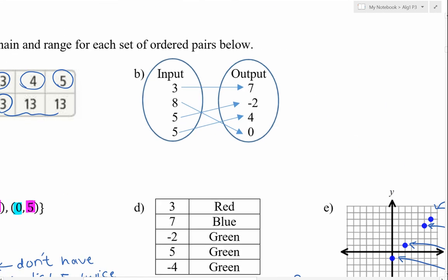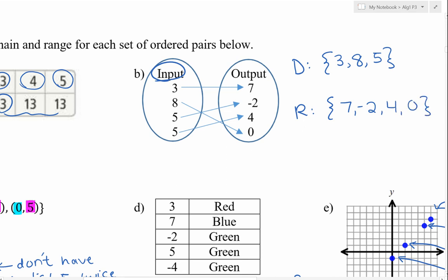For part b, identify the domain and range. The domain — those are the inputs — so we have 3, 8, and 5. And for the range, our outputs are 7, negative 2, 4, and 0.